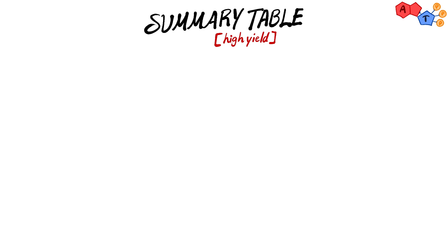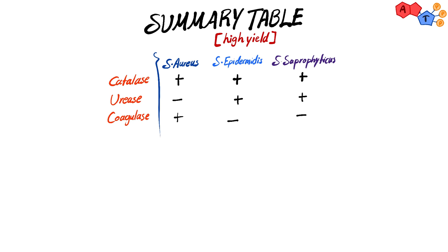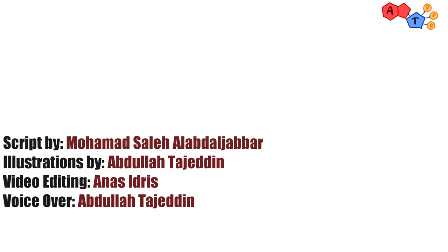To summarize the enzymes these bacteria have — which helps in lab testing — all staphylococcus species are catalase positive. Staph epidermidis and staph saprophyticus are urease positive, whereas staph aureus is negative for that enzyme. Only staph aureus is coagulase positive. The urease enzyme breaks down urea into ammonia, which raises the pH around the bacteria, allowing it to survive longer and colonize, as these species prefer an alkaline environment — making urease a virulence factor.